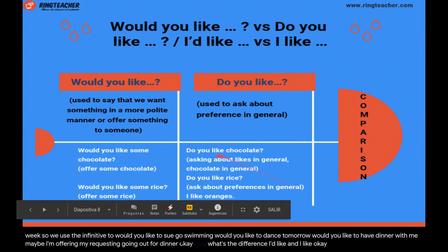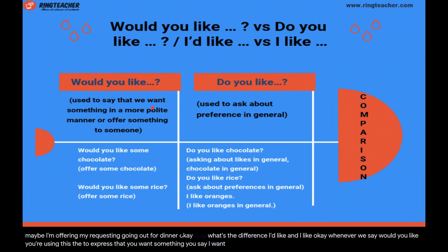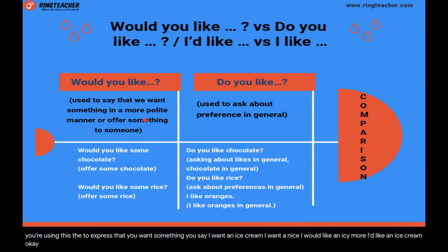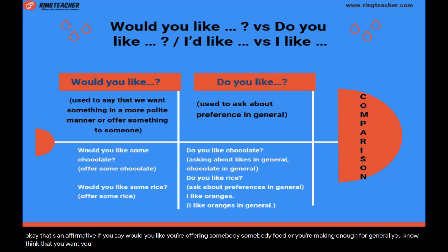Now, what's the difference between 'would you like' and 'do you like,' or 'I'd like' and 'I like'? When you say 'would you like,' you're expressing that you want something: 'I'd like an ice cream.' If you say 'would you like,' you're making an offer. You could say 'do you want rice?' but that's not very polite — you say 'would you like some rice?'